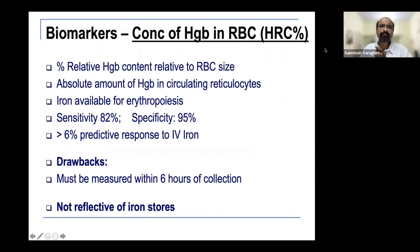The concentration of hemoglobin in RBCs (CHr) — available hemoglobin for erythropoiesis — has good sensitivity and specificity; a value >6% predicts response to IV iron. The drawback is the sample must be tested within six hours of collection, and again it does not reflect iron stores.